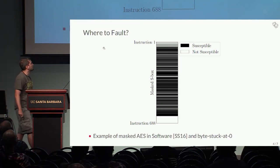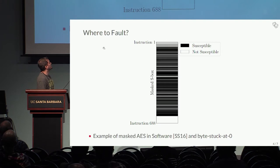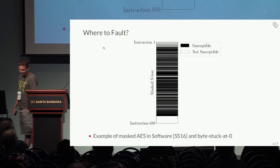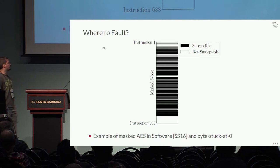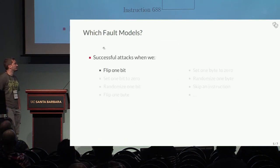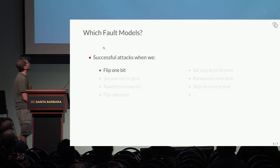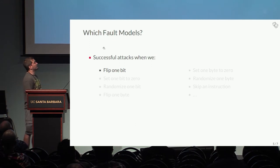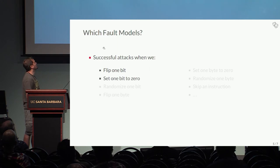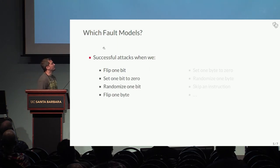Approximately 70% of these instructions are susceptible in order to mount an attack. And if you consider that setting one byte to zero is a somewhat hard fault model, you can also, for this specific implementation, flip one bit, set one bit to zero, randomize one bit, flip one byte, set one byte to zero, or randomize one byte.